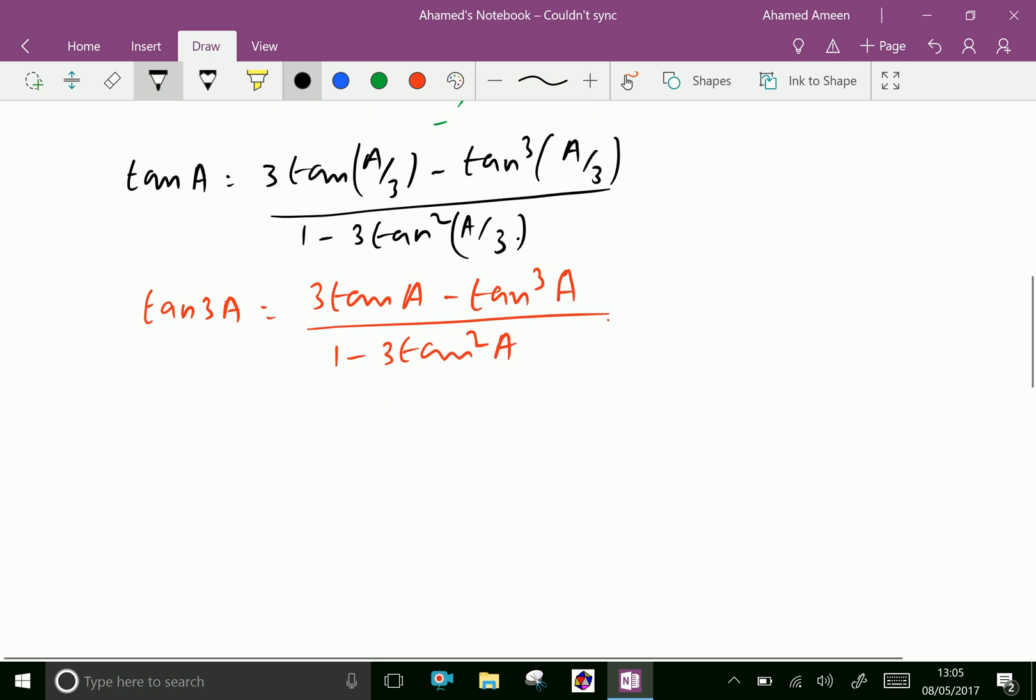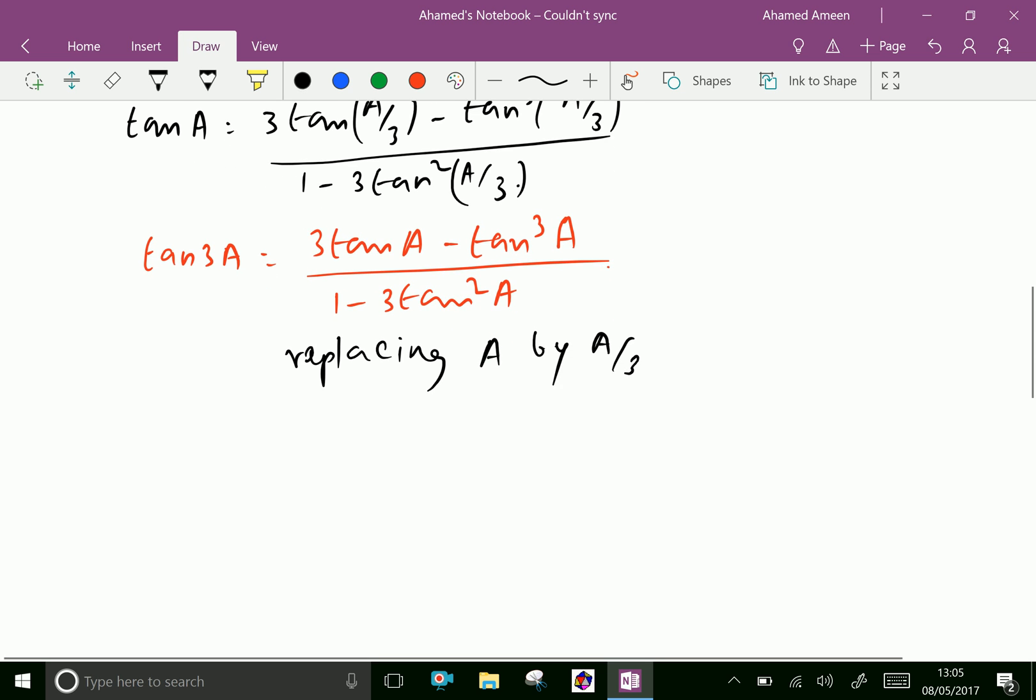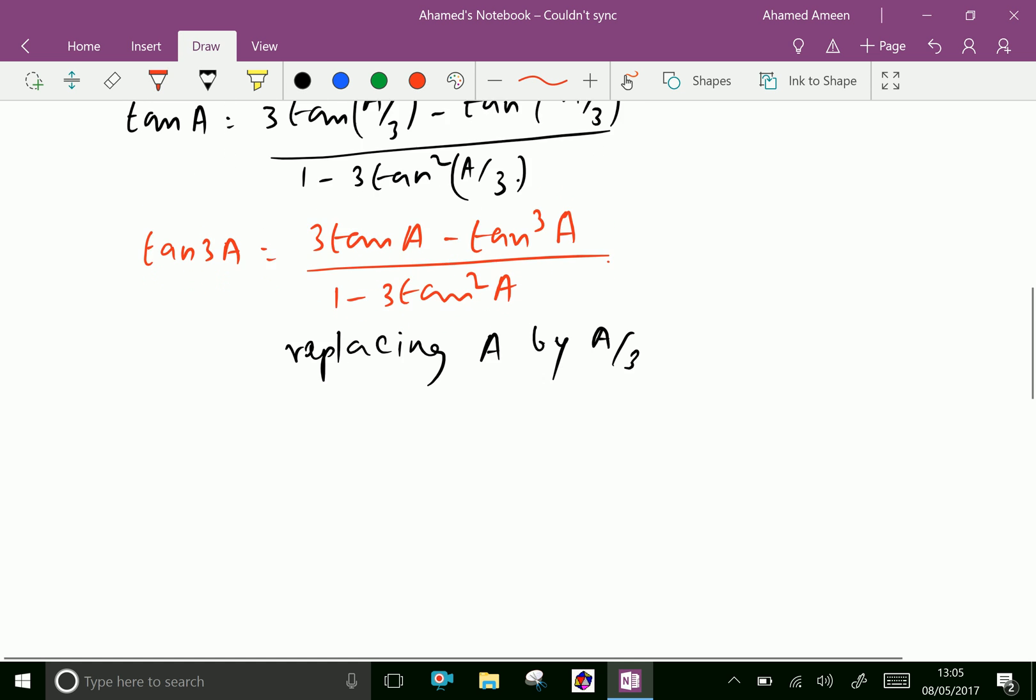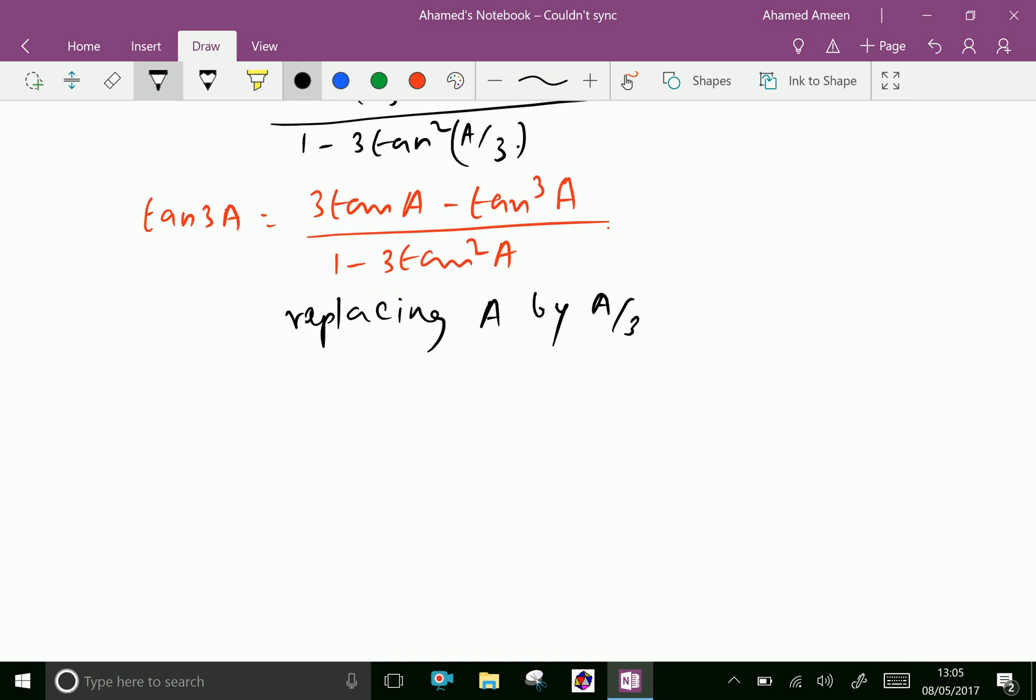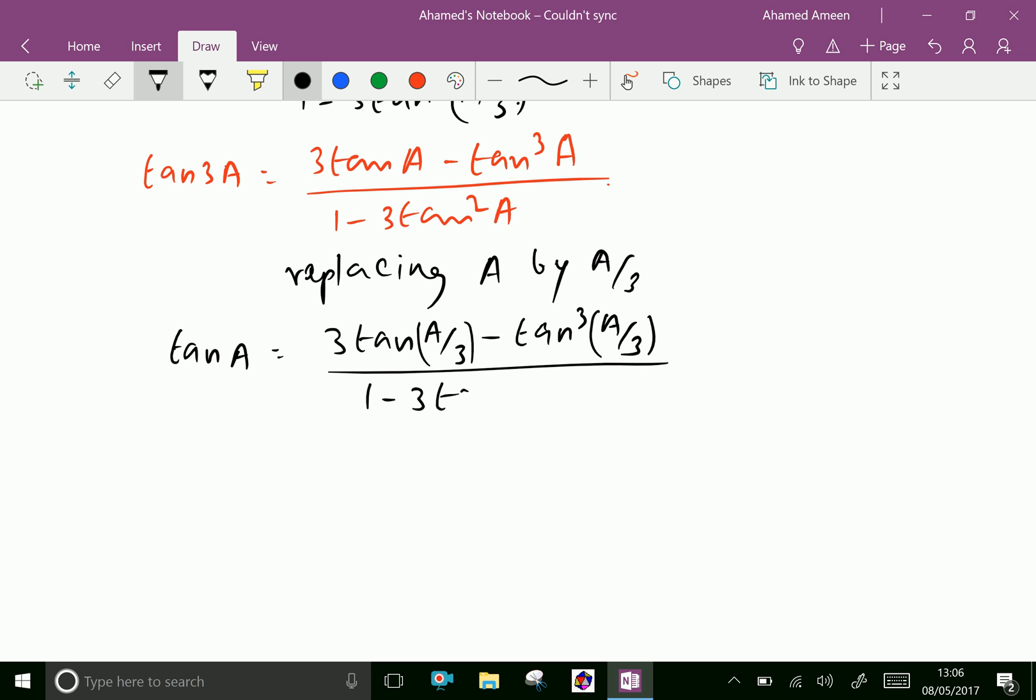Now replacing A by A/3, we get tan, instead of 3A we have to write A equals 3 tan(A/3) minus tan³(A/3) over 1 minus 3 tan²(A/3). We proved.